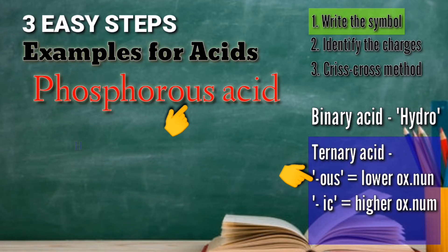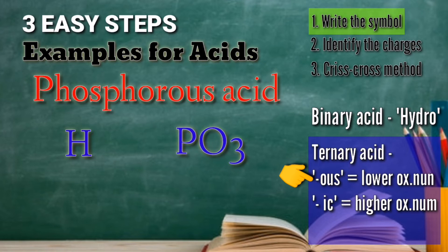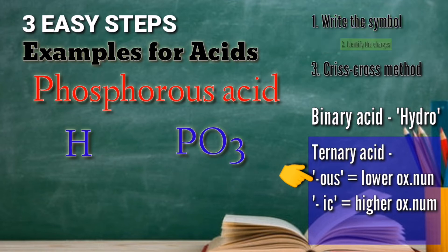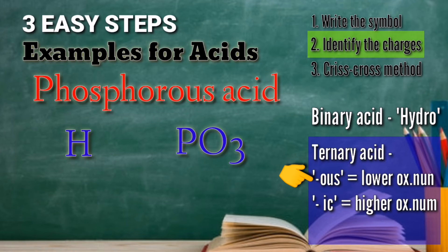For step 1, write the symbol. We write H first as an indication that it is an acid. Then phosphorous is PO3 — that is the phosphite, the lower oxidation number of phosphate. For step 2, let's identify and assign the charges. Hydrogen is always positive 1. How about our PO3 or phosphite?